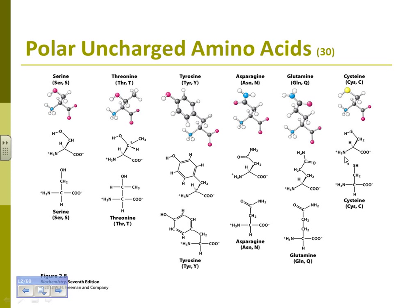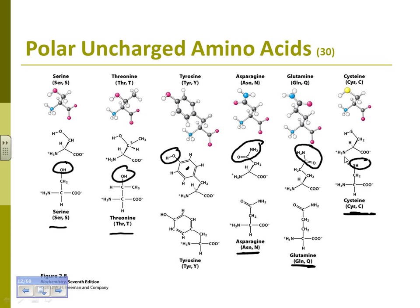Looking at the polar uncharged amino acids: the other one that has a sulfur in it is cysteine. Cysteine is another favorite — we'll talk about that in a bit. Cysteine and threonine have OH groups. Asparagine and glutamine both have an amide group — a carbonyl with NH2. Tyrosine has the aromatic group with an OH attached to it, so it has both aromatic character and polarity.